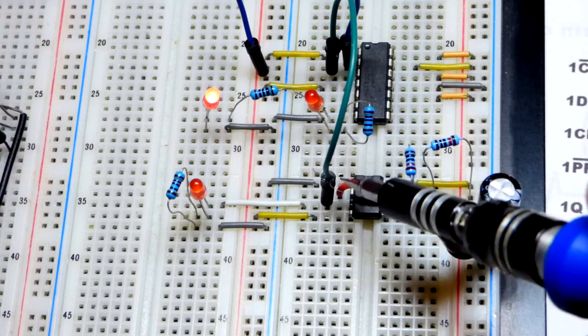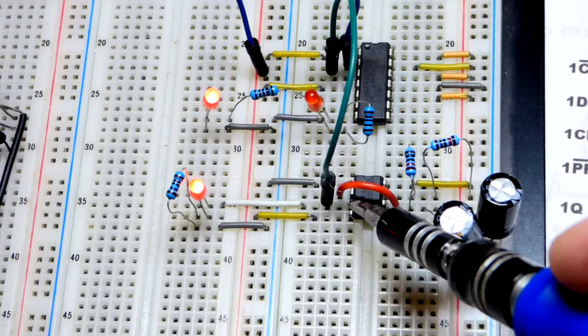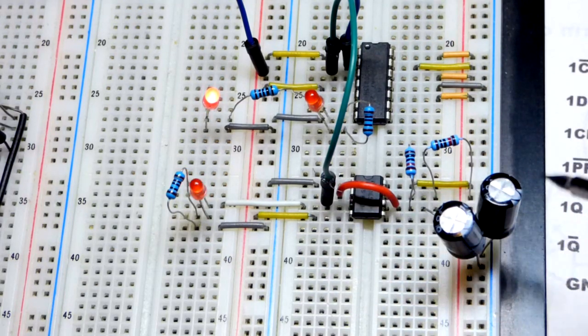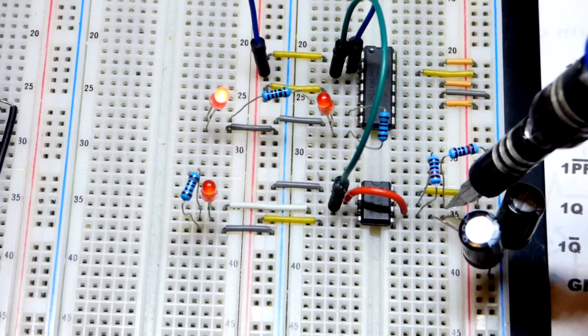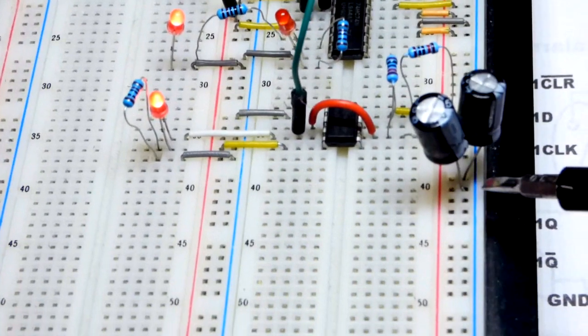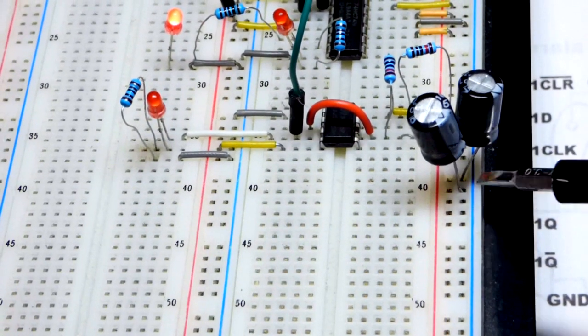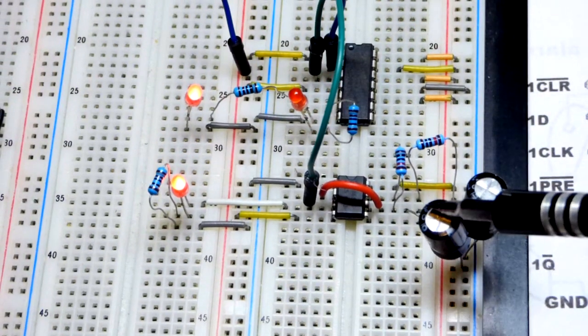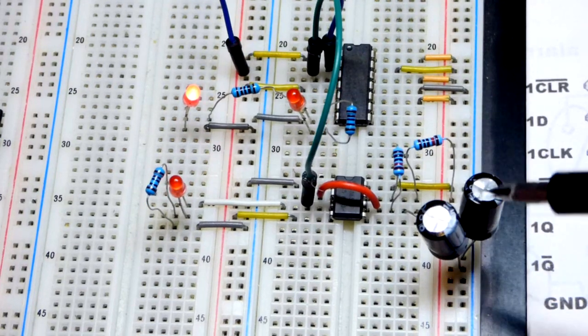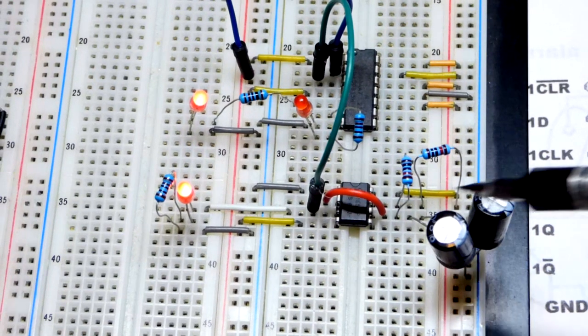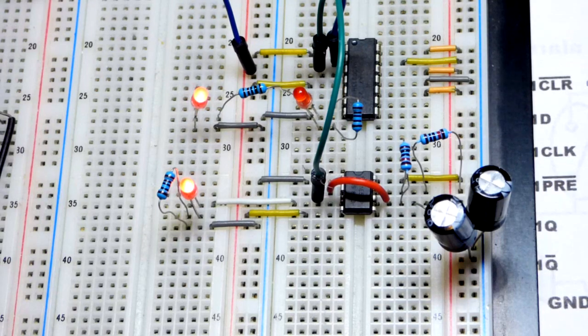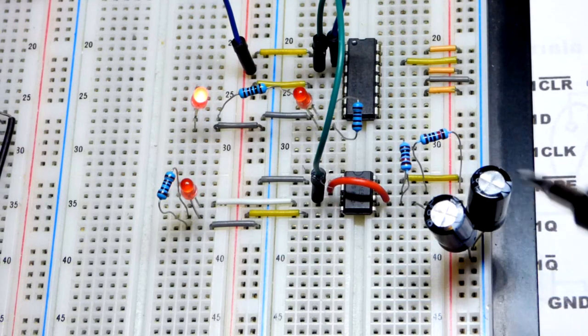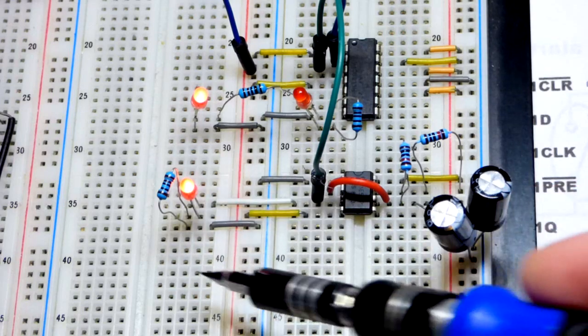The input comes from the output of a 555 timer wired in astable mode right here. We've got a ten kiloohm resistor and another ten kiloohm resistor coming to the two capacitors there. The other side of the two capacitors, the negative side, goes to the negative rail. That's a 100 microfarad capacitor and another 100 microfarad capacitor. When you put them in parallel, their capacitance simply adds up, so we have 200 microfarad.